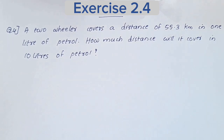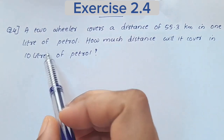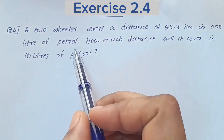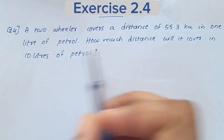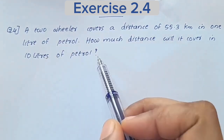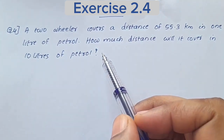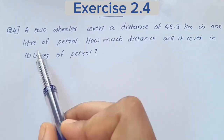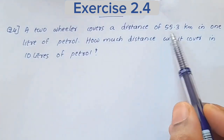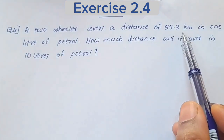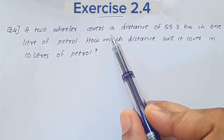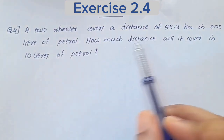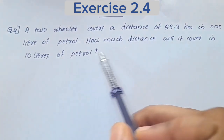A 2-wheeler covers a distance of 55.3 km in 1 liter of petrol. How much distance will it cover in 10 liters of petrol? 1 liter of petrol gives 55.3 km. How much distance do we cover in 10 liters of petrol?